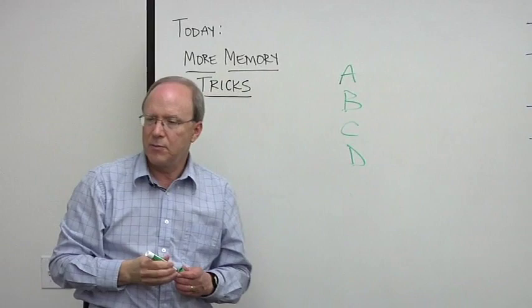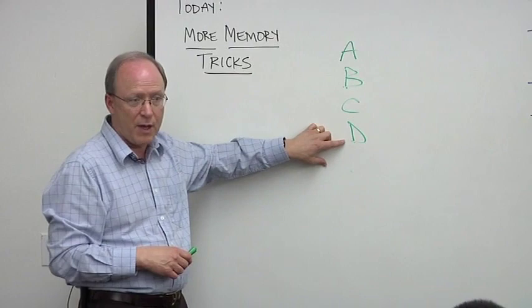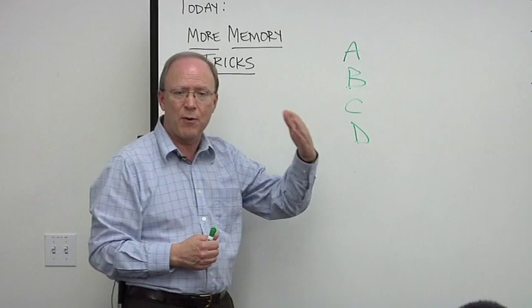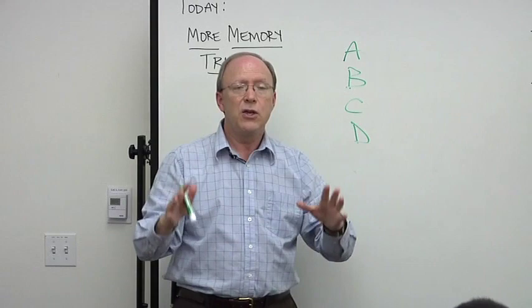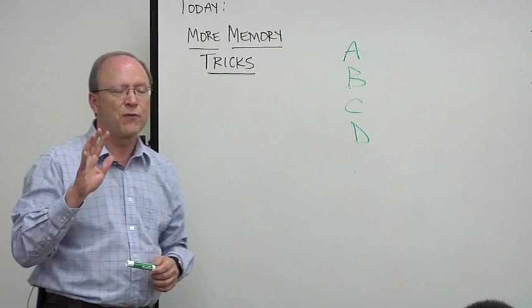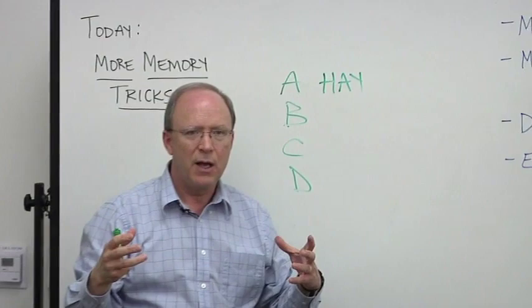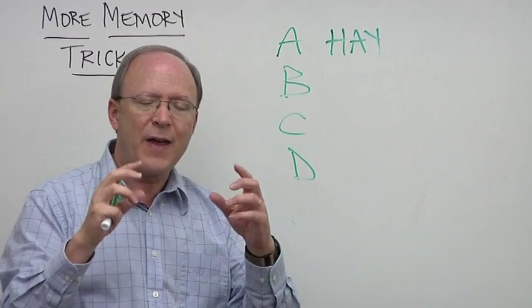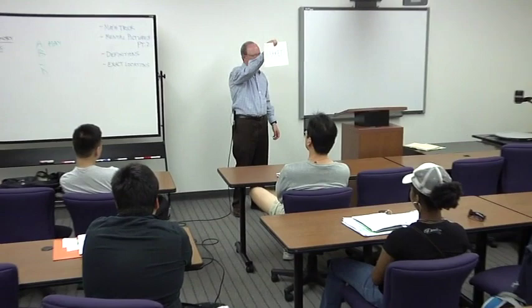I'm going to teach you 12 names of streets that are all in the Long Beach area. You'll probably recognize most of these streets — three in group A, three in B, three in C, and three in D. When I give you a test at the end of the workshop, I'll give you the name of a street and expect you to know which group it's in. We're going to use the sound-alike word 'hay' — everybody knows what hay looks like. The first street in group A is Market.